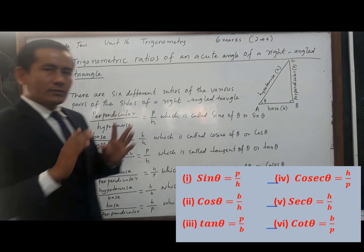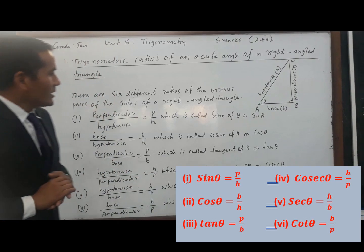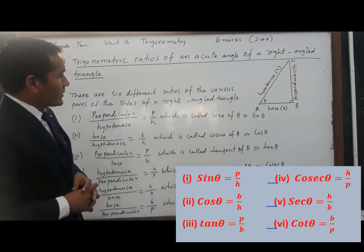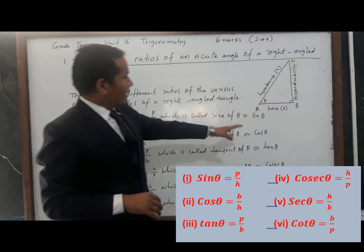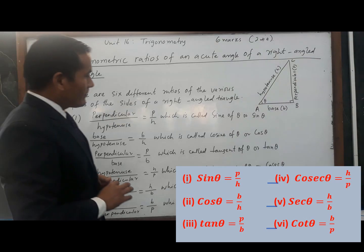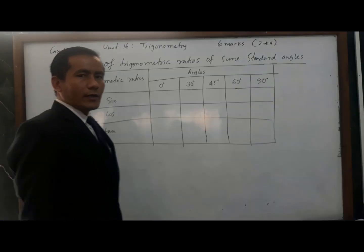Now I have told you the reciprocal of sine theta is cosec theta, cos theta is sec theta, and tan theta is cot theta.